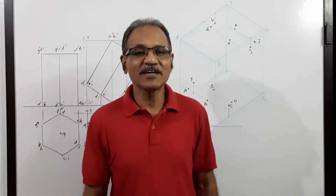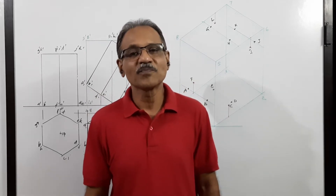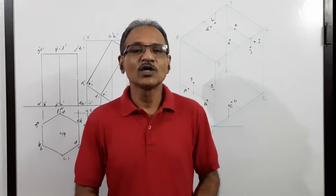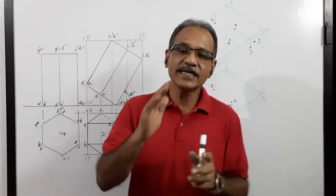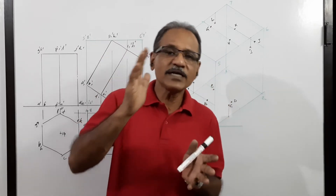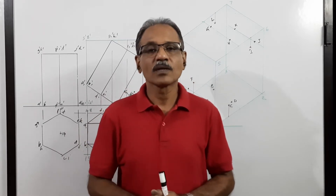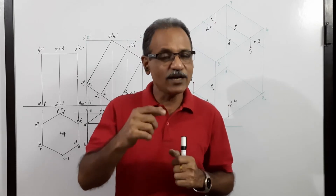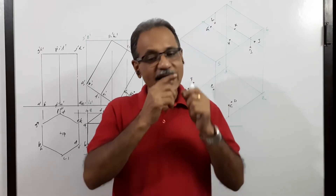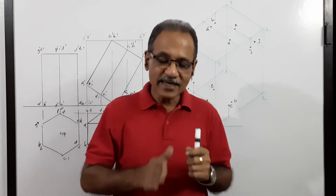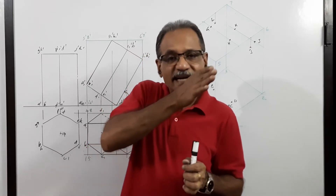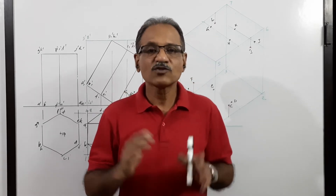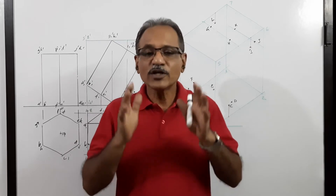Welcome to engineering graphics class. In this video, in isometric projection, we are going to draw the isometric view of a hexagonal prism in a tilted position — not standing upright, but in a tilted position. It is resting on HP on a side of its base, with the axis parallel to VP and the rectangular face containing that edge making 60 degrees to HP.